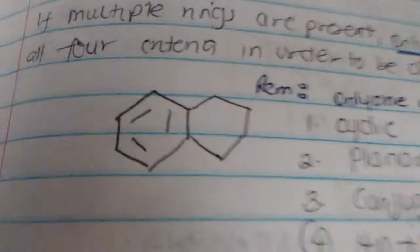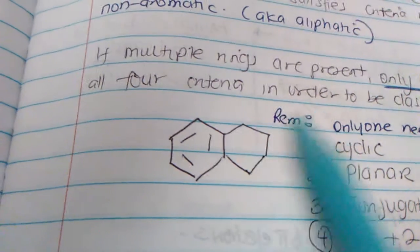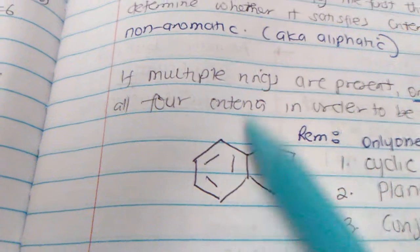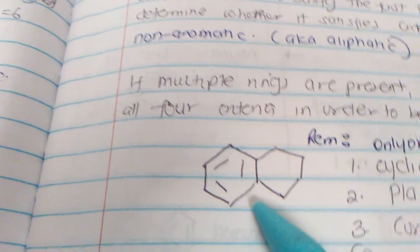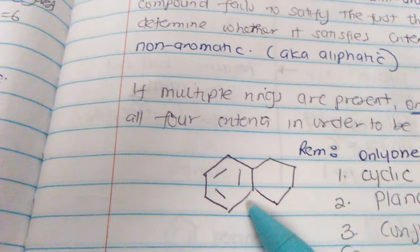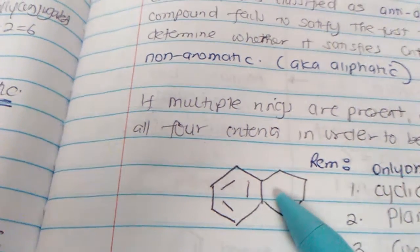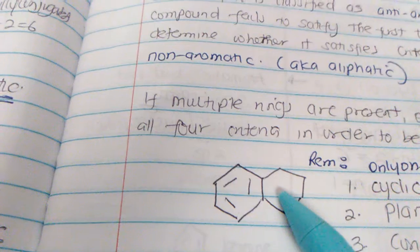This would be an example of an aromatic compound. It has at least one ring, all ring atoms are planar and conjugated, and it has 6 electrons in this ring. So it obeys Hückel's rule and it's aromatic — n is equal to 1 when you solve for n.